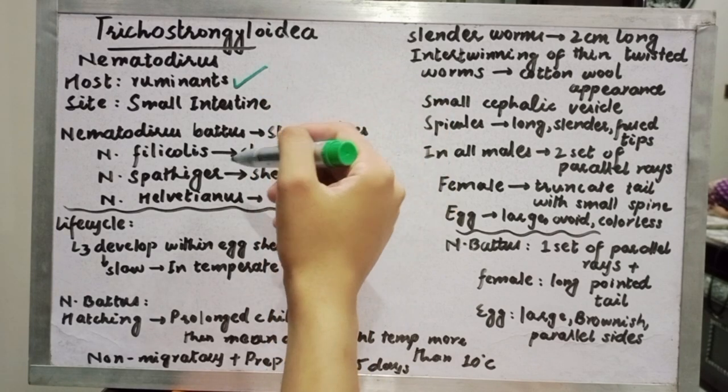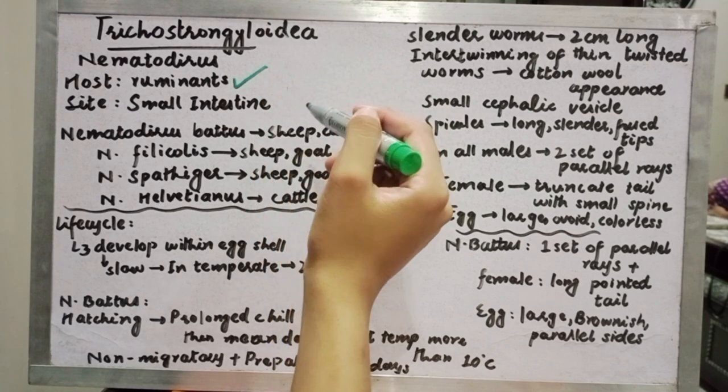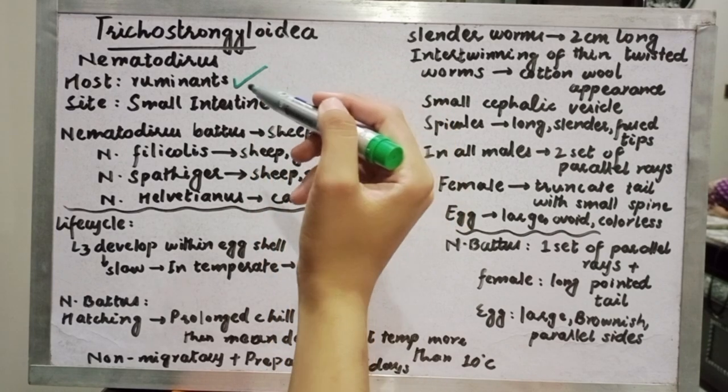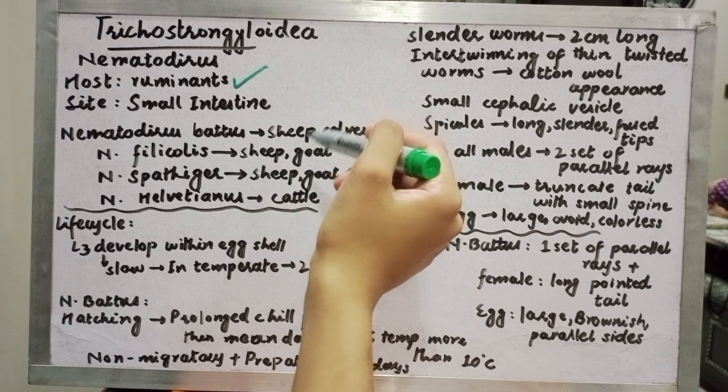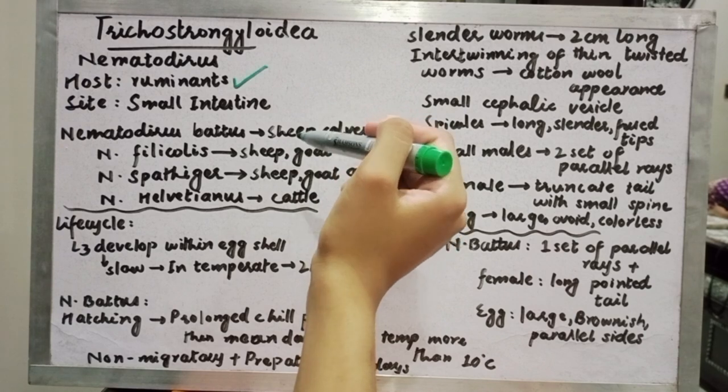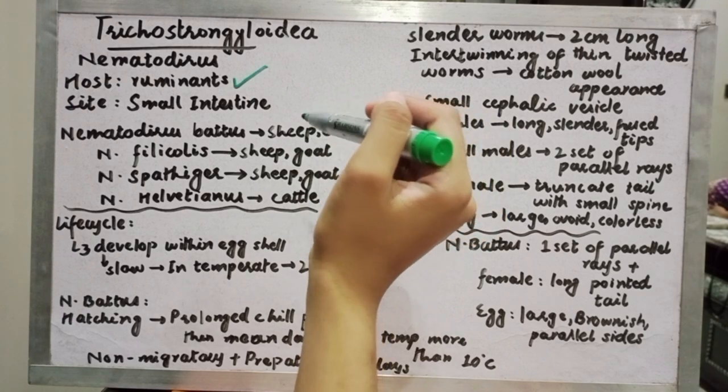To talk about the species of Nematodirus: Nematodirus battus, Nematodirus filicollis, Nematodirus spathiger, and Nematodirus helvetianus.